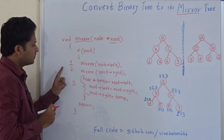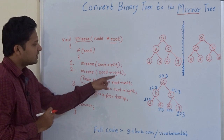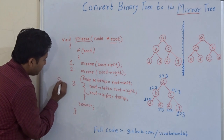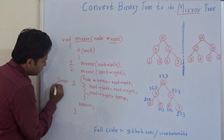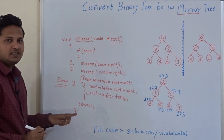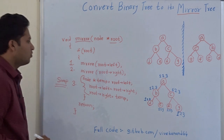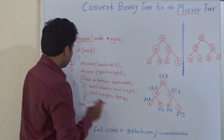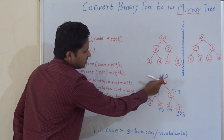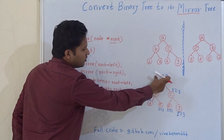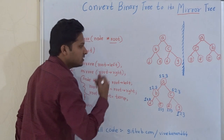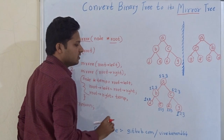The second step is to pass the right subtree to the mirror function, and the third step is to swap the left child with the right child. These three steps are going to be executed at every node.